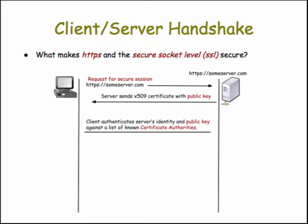The client takes this certificate and uses one of its built-in digital certificates to authenticate that the server really is who it says it is — that the server is Amazon. It also uses the certificate authority's information to confirm that the public key that was sent does belong to Amazon. So the client can be assured that when it sends an encrypted message back to the server, it's sending it to Amazon and only Amazon can read the message. Once the client authenticates the server's identity and public key, it uses the public key to encrypt a randomly generated symmetric key, which it generates internally and sends back to the server.